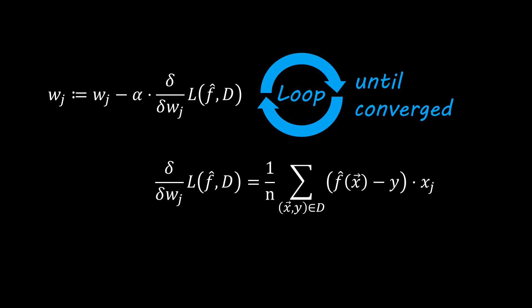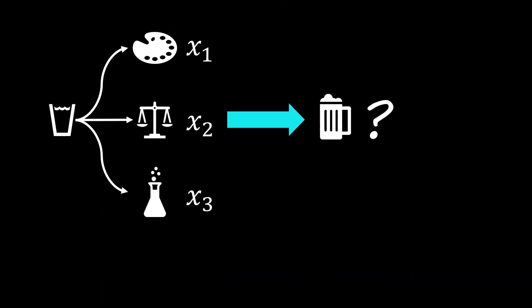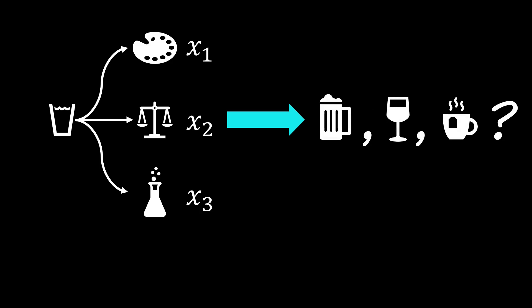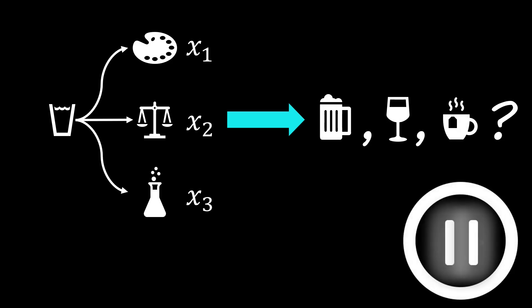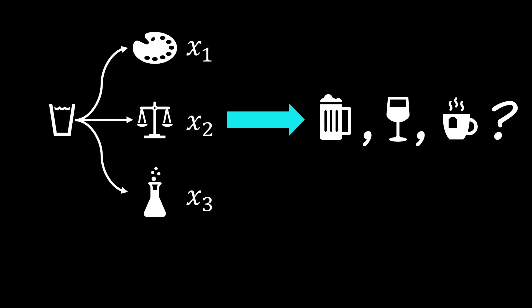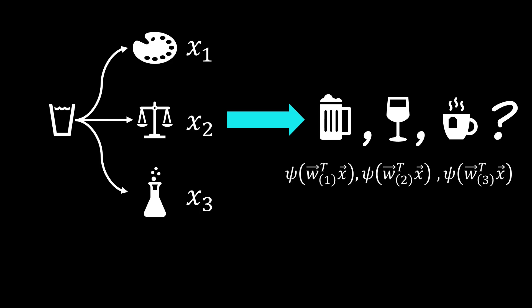Let us go back to our picture and see whether we can improve our classifier. Classifying liquids into beer and not beer is good, but what if we want to do more? For example, what if we want to classify the liquid into beer, wine, or tea? One simple solution is to take a binary classifier per class. Note that we independently train a different set of weights for each classifier. To know which class a liquid belongs to, we can then simply take the class that has the largest predicted likelihood.